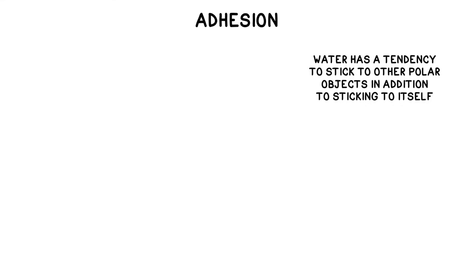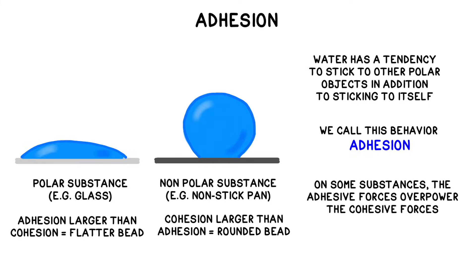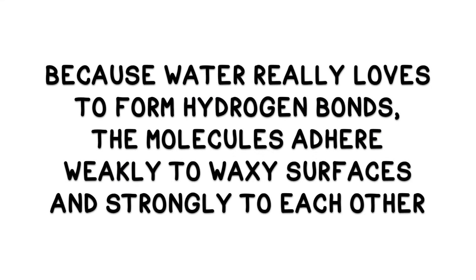Water also has a tendency to stick to other polar objects in addition to sticking to itself. We call this behavior adhesion. The combination of cohesion and adhesion is what causes water to form a rounded bead that rolls around on a waxy surface like a leaf or a nonstick pan rather than spreading out into a puddle. Because water really loves to form hydrogen bonds, the water adheres weakly to the waxy surface but strongly to itself, forming a rounded bead.